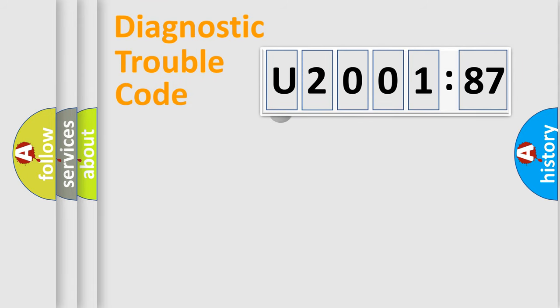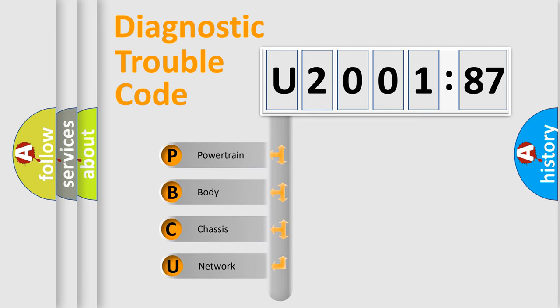First, let's look at the history of diagnostic fault code composition according to the OBD2 protocol, which is unified for all automakers since 2000. We divide the electric system of automobile into four basic units.